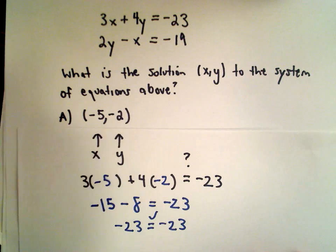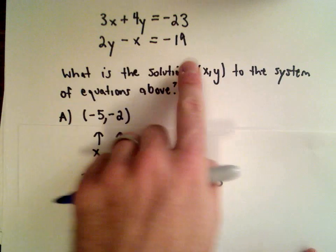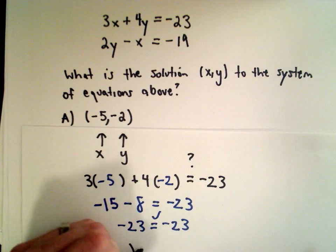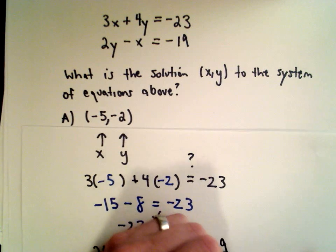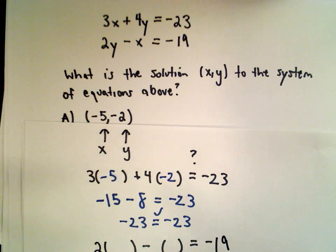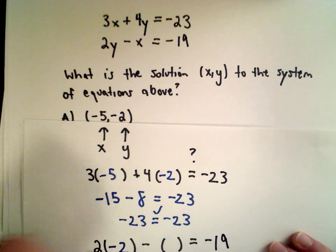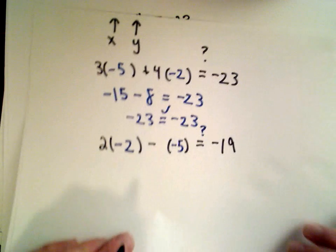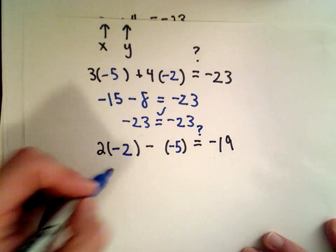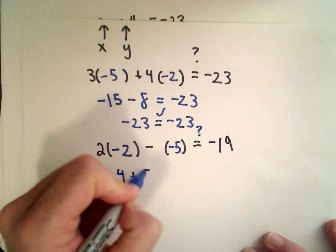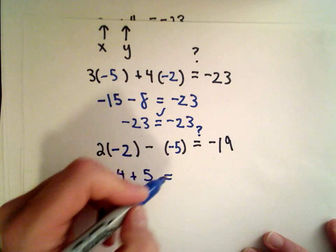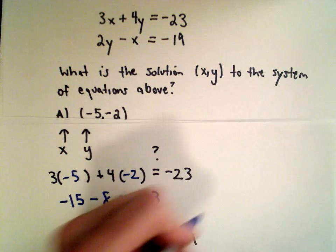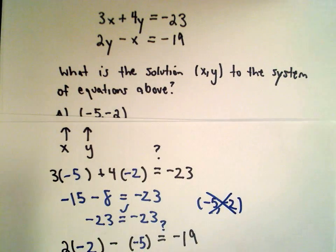That doesn't mean negative 5 comma negative 2 is the solution, because it also has to work in the second equation. There we had 2y minus x equals negative 19. If I substitute in y equals negative 2 and x equals negative 5, does that equal negative 19? Well, no—I'm going to get negative 4 plus 5, which definitely does not equal negative 19. So that tells me that negative 5 comma negative 2 is not the solution.